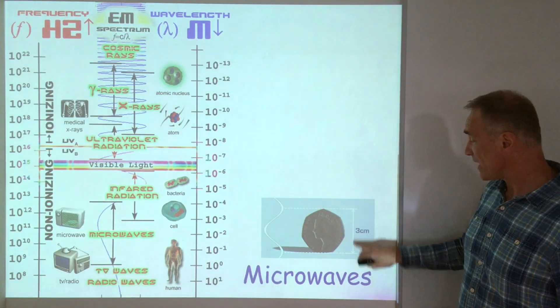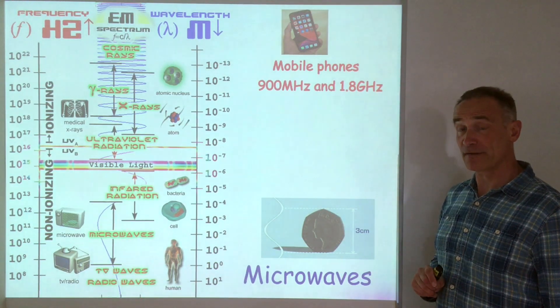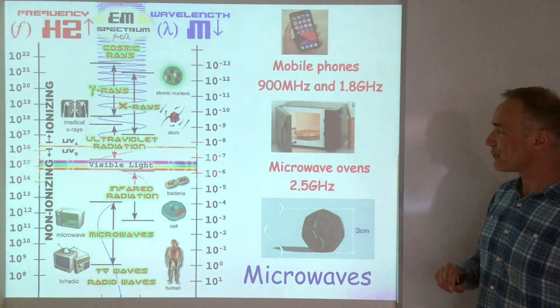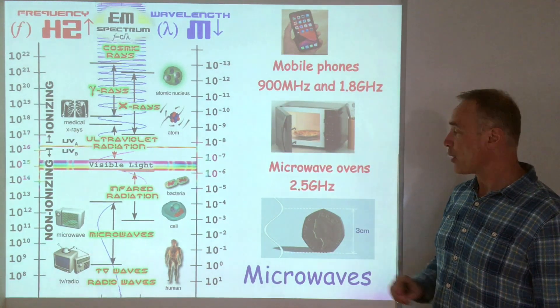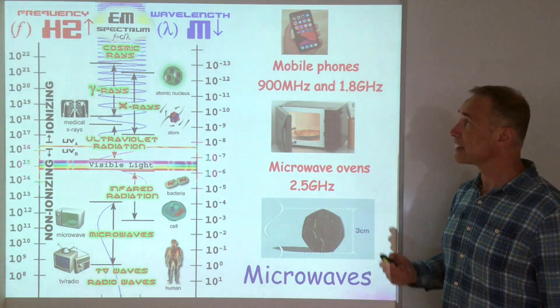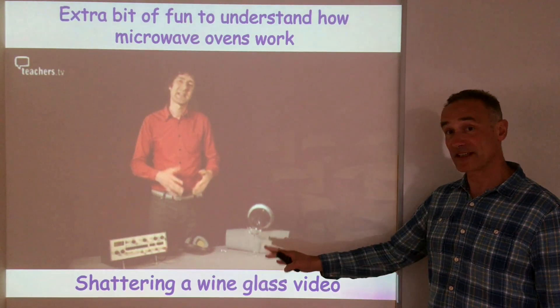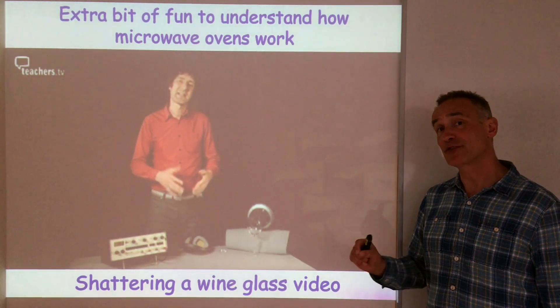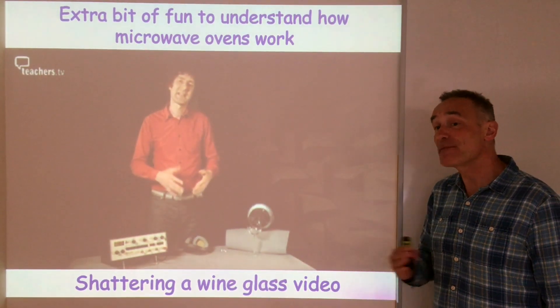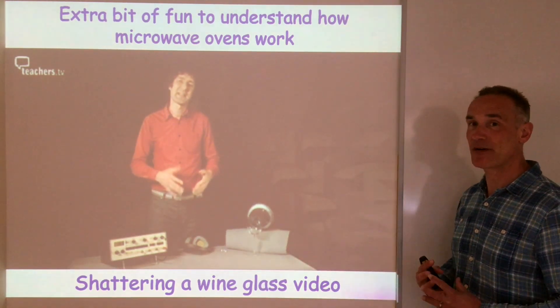Microwaves have a wavelength of about three centimeters and we've already seen they're used for mobile phones. They only use two frequencies for that and we also know we use them for ovens. A particular frequency is used for ovens. Each object has a particular resonant frequency and if you force an object to vibrate at its resonant frequency, it absorbs all the energy that that sound wave has.